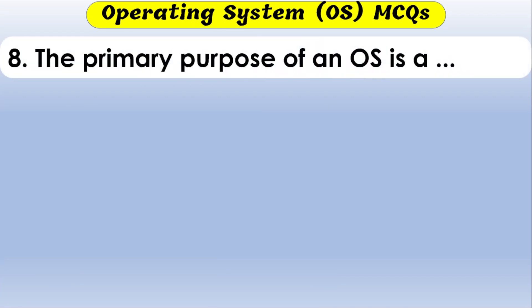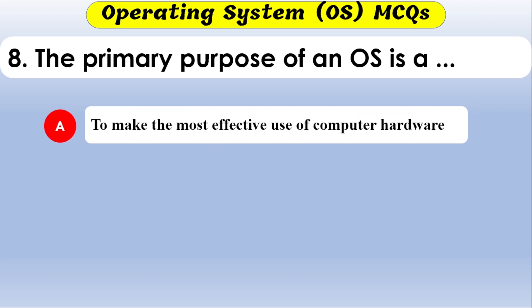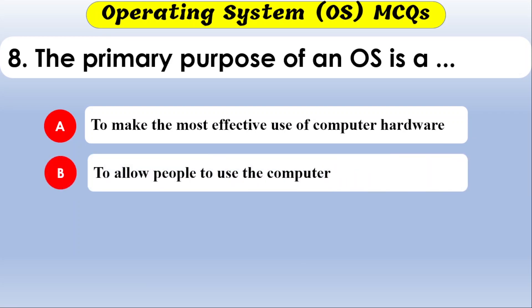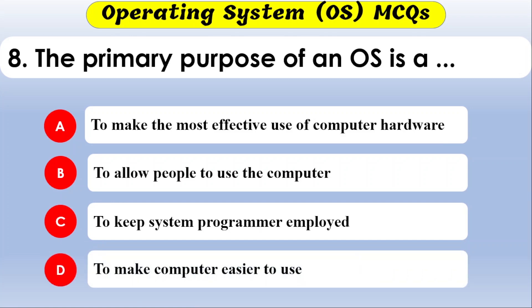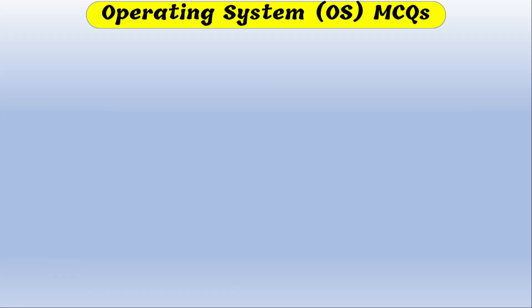The primary purpose of an operating system: the options are to make most effective use of computer hardware, to allow people to use the computer, to keep system programmers employed, or to make the computer easier to use. The correct option is the first one — to make the most effective use of computer hardware.